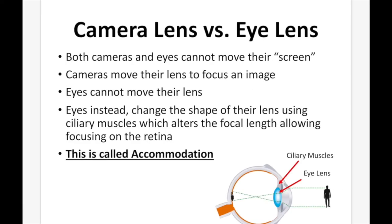Camera lens versus eye lens: both cameras and eyes cannot move their screens — the retina is fixed, and the back of the camera is fixed. Cameras move their lens to focus an image, but eyes can't move their lens either. Instead, eyes change the shape of their lens using ciliary muscles, which alter the focal length, allowing focusing on the retina. The lens can be relatively flat, thick in the middle, or thin and stretched out, depending on how light is coming into the eye.